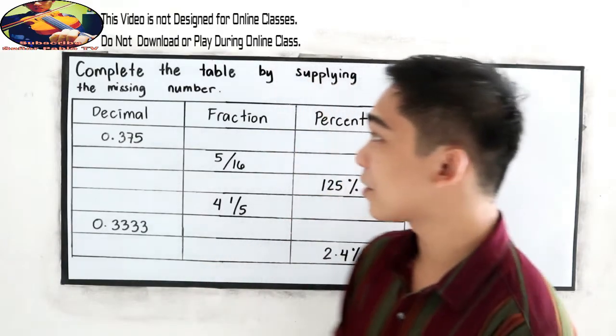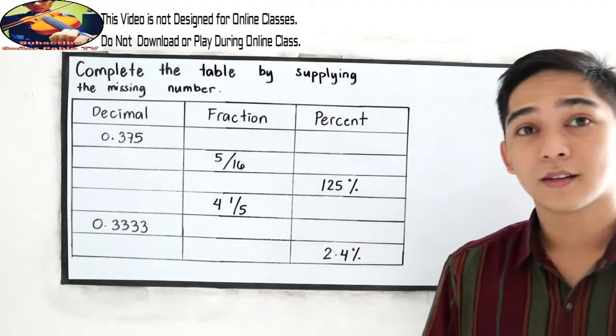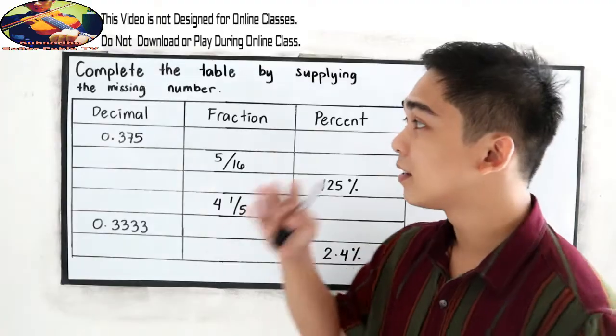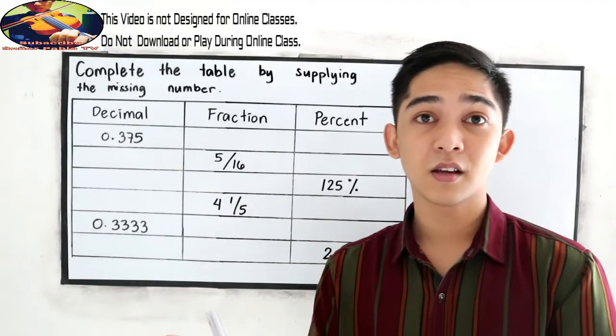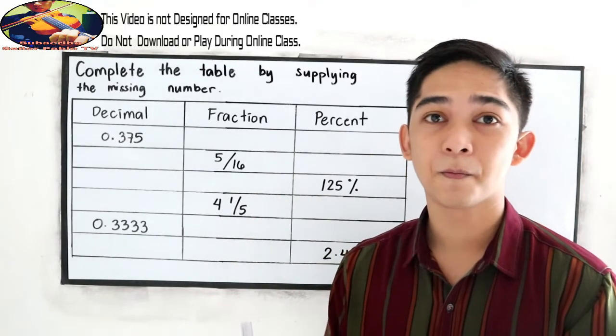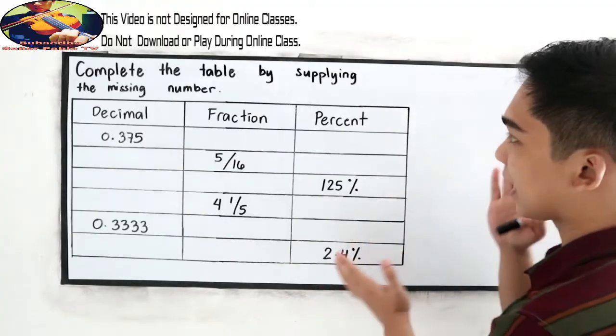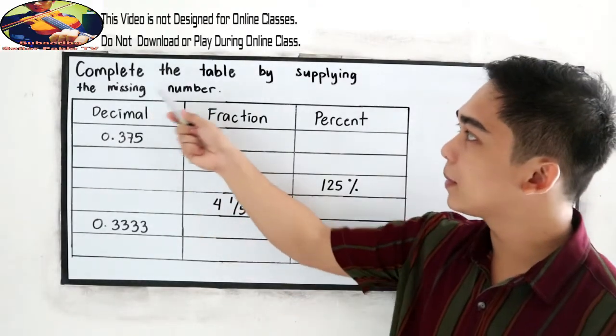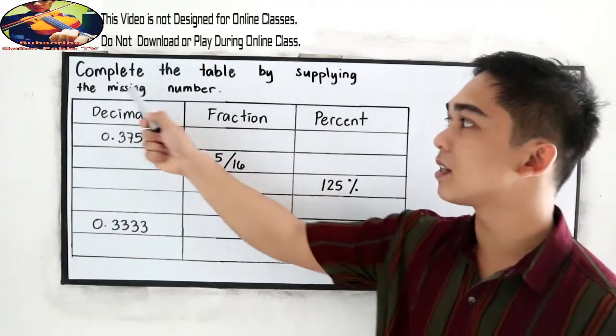So let us summarize our discussions in our previous videos converting decimal to fraction to percent and vice versa. Now I have a table here. The direction is complete the table by supplying the missing number.